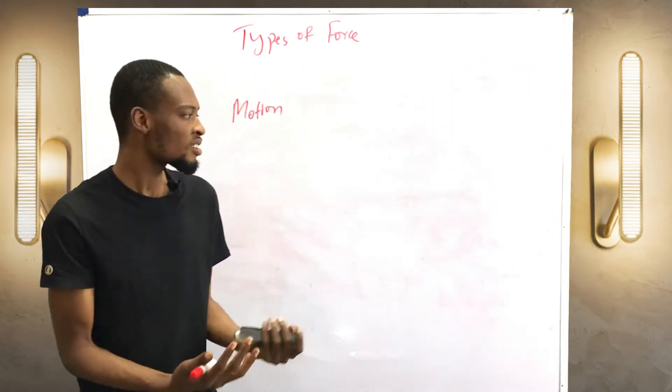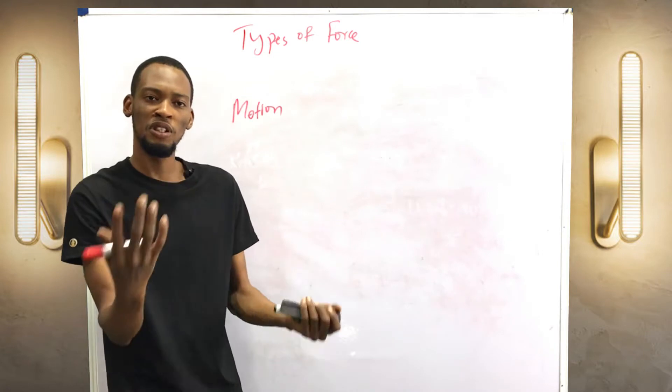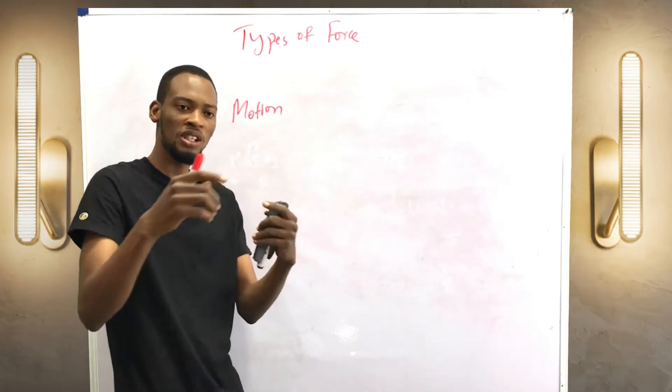So we have different types of motion: random motion, zigzag motion of a body, translational motion, and rotational motion.